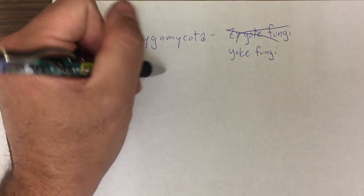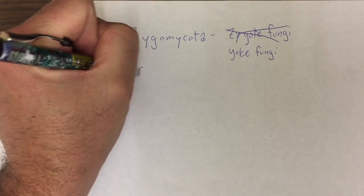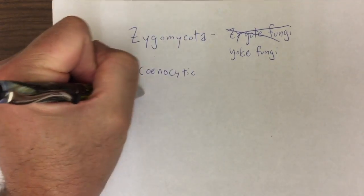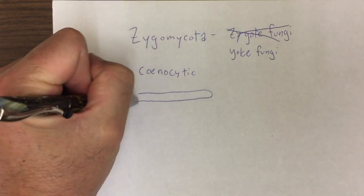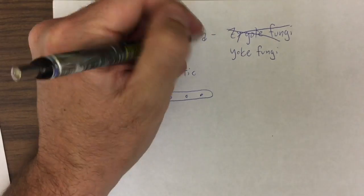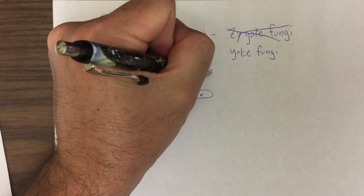So zygomycetes are cenocytic, which means their hyphae don't have regular walls between the nuclei.